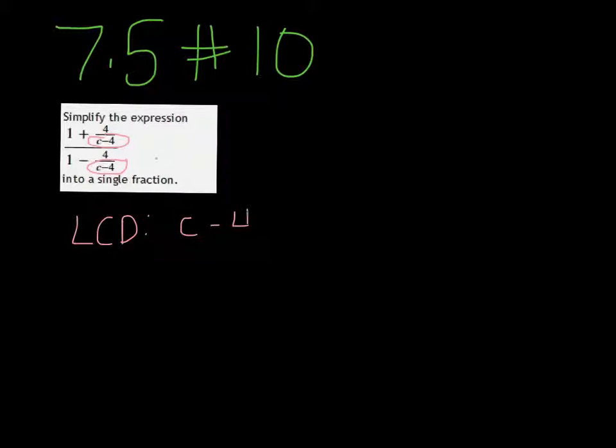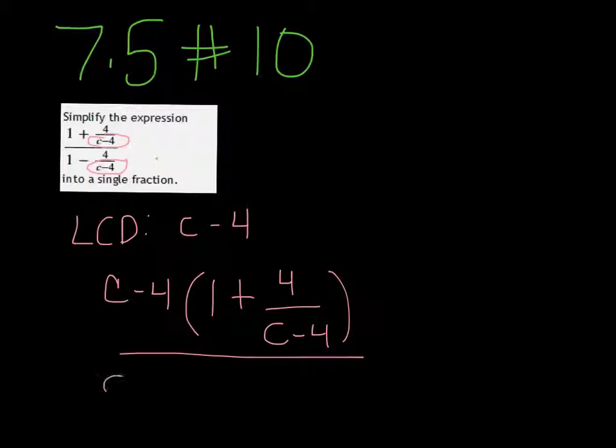You just want to multiply the top and the bottom of the fraction by c minus 4. So c minus 4 times the top, and c minus 4 times the bottom.